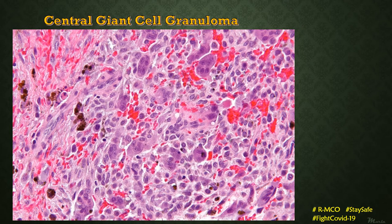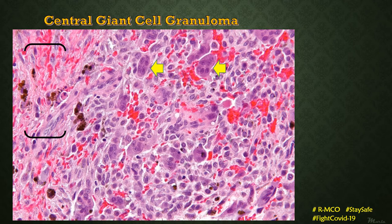In this magnified image, the stroma is fibrovascular with spindle-shaped cells, blood vessels, and collagen fibers. Numerous large multinucleated giant cells are scattered throughout the stroma. To identify a multinucleated giant cell, note that it is a single, large cell — larger than usual connective tissue cells — with multiple nuclei haphazardly arranged within the cytoplasm. These multinucleated giant cells generally show a haphazard arrangement of nuclei. Extravasated RBCs are also seen throughout the stroma.